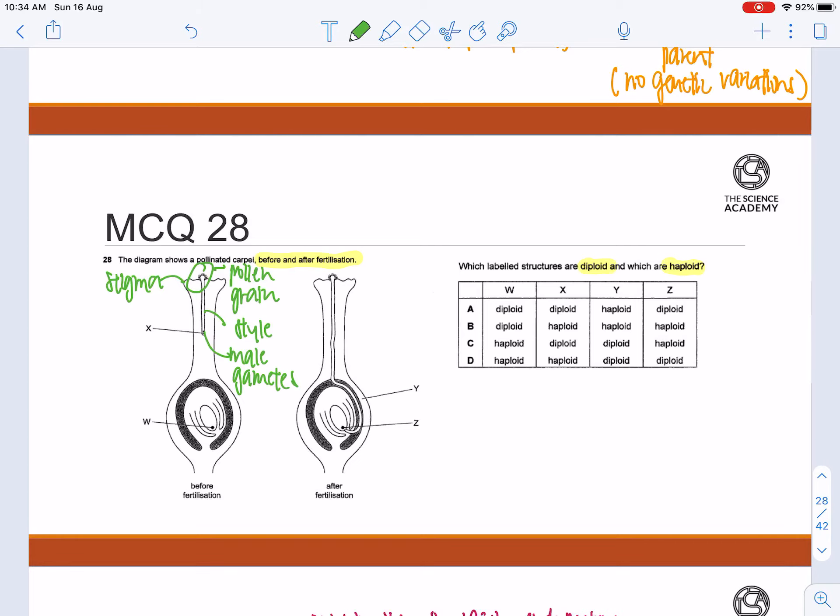The male gametes will travel down the stalk such that it will go all the way and eventually fuse with W, known as the ovum, or the egg cell.